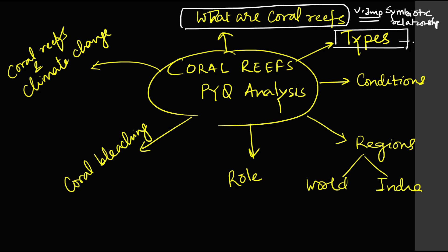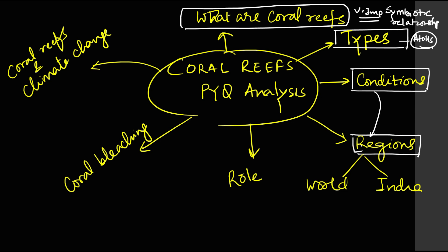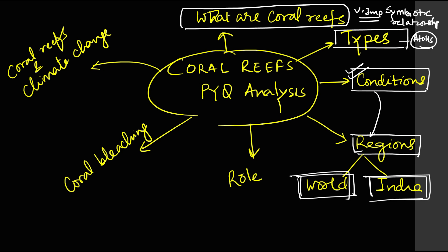The different types of coral reefs are fringing coral reefs, barrier coral reefs, and atolls. The topic of atolls is very important this year. Next, what are the conditions for the growth of coral reefs? The conditions determine where coral reefs are present in the world, because they will only be present in regions where conditions are favorable. UPSC has been asking questions on the distribution of coral reefs in the world, and also in India.